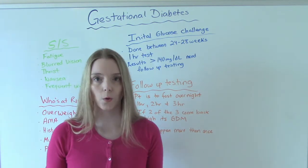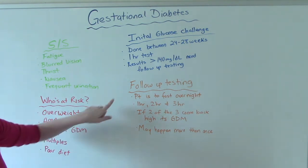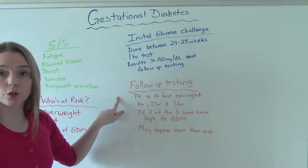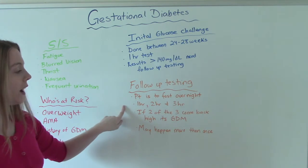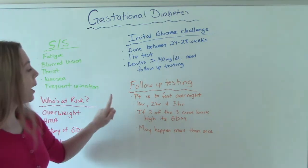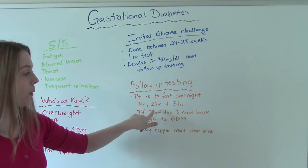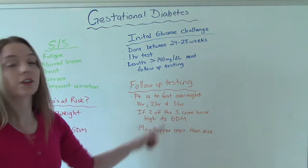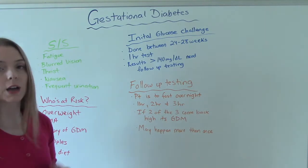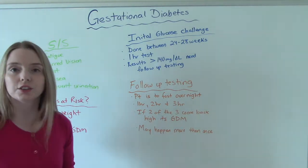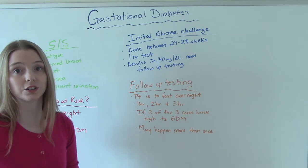What does follow-up testing look like? The patient is to fast overnight, and then they're going to drink the substance again. They're going to get it done at one hour, two hours, and three hours — so we're doing it three times. If two of these three results come back high, then the doctor can go ahead and diagnose you with gestational diabetes.